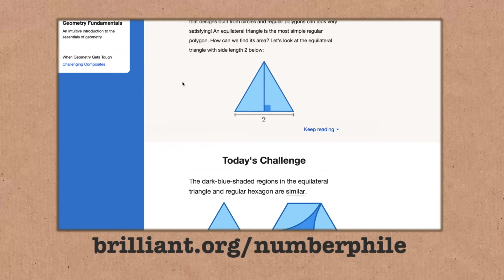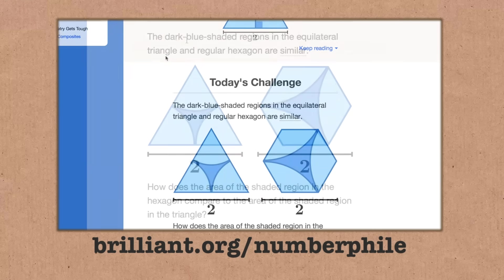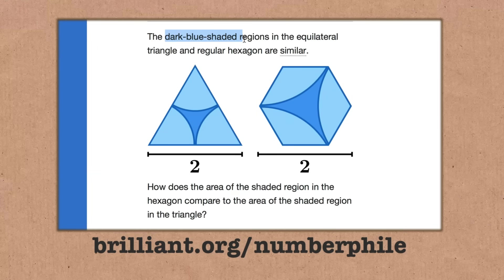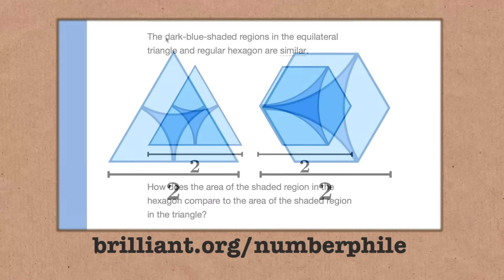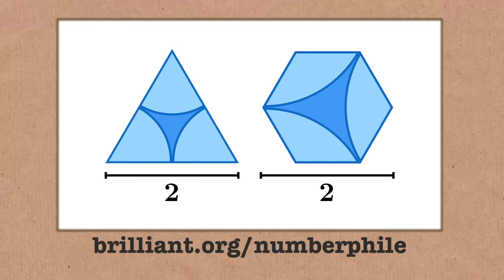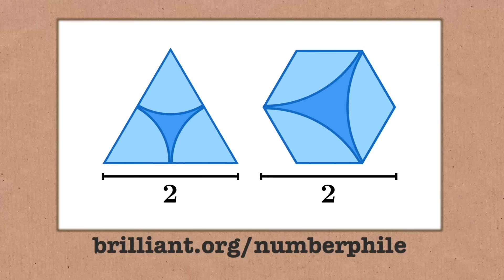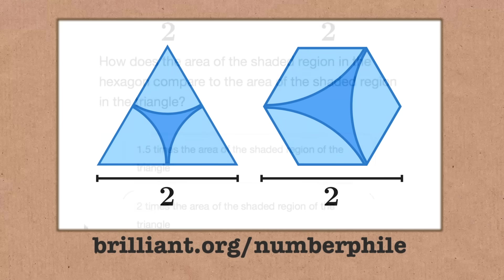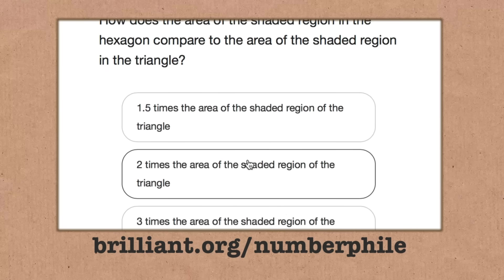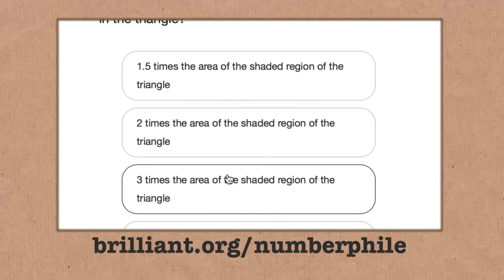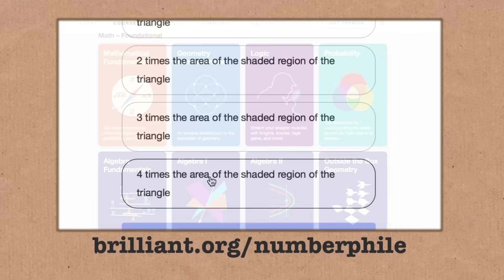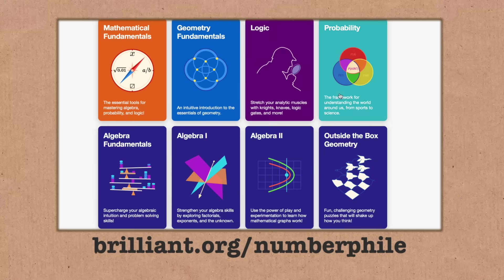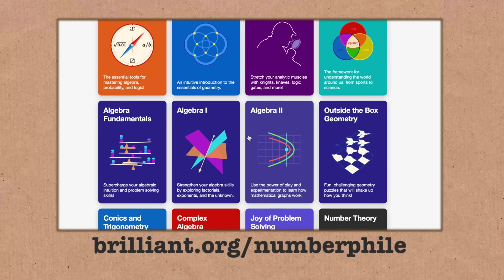Now, like many of the daily challenges, it starts off with something pretty simple. We've got an equilateral triangle and a regular hexagon there, and it says those dark blue shaded regions are similar. So how does the area of the shaded region in that hexagon compare to the one in the triangle? What do you think? Is it one and a half times bigger? Two times bigger? Three times bigger? Maybe even four times bigger? This is just an example of some of the content you're going to find on Brilliant.